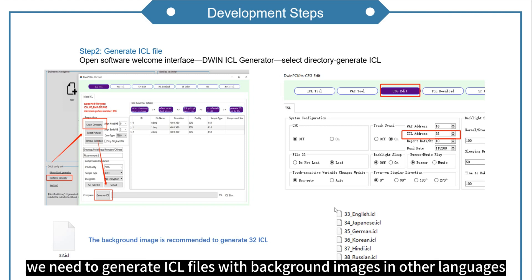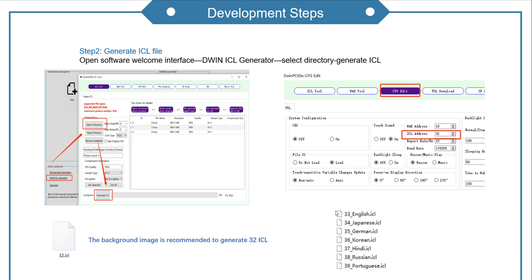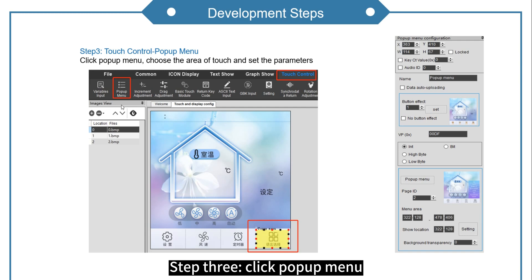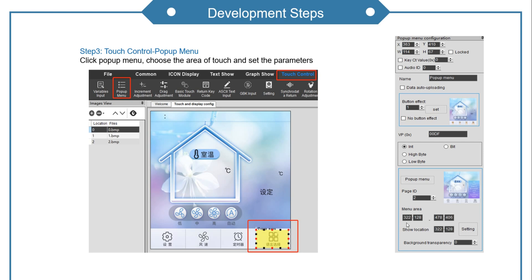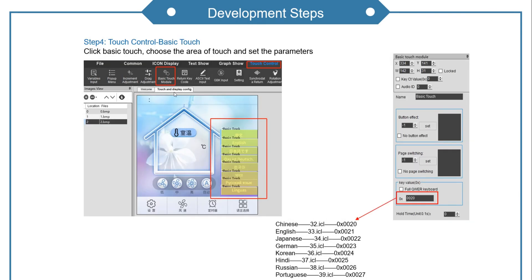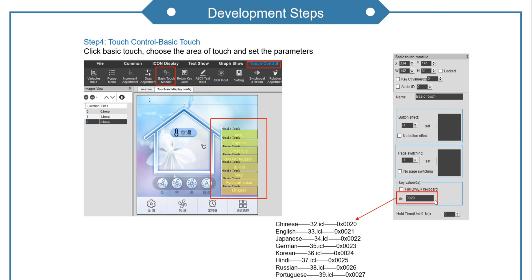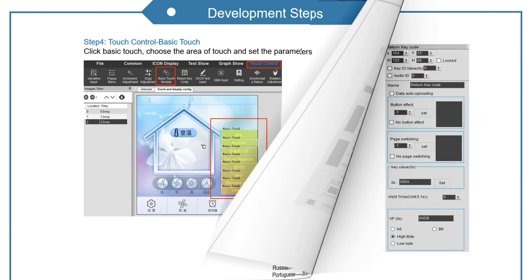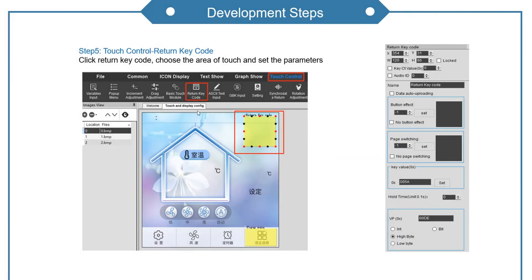In addition, we need to generate ICL files with background images in other languages. We can remark the language when naming it to facilitate identification. Step 3: click pop-up menu, choose the area of touch, and set the parameters. Step 4: click basic touch, choose the area of touch, and set the parameters. It should be noted that different languages need to set the corresponding key value according to the image ID. Step 5: click return key code, choose the area of touch, and set the parameters.